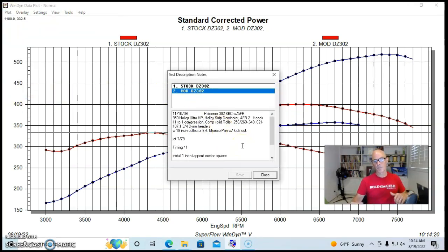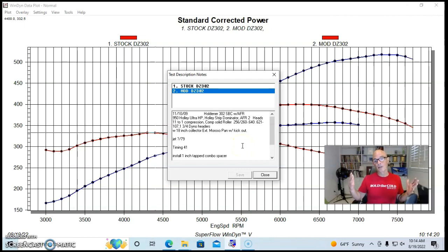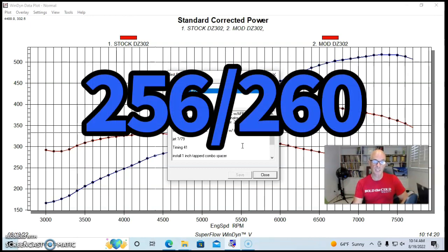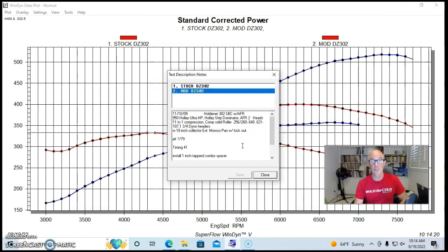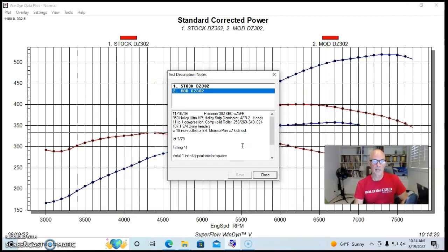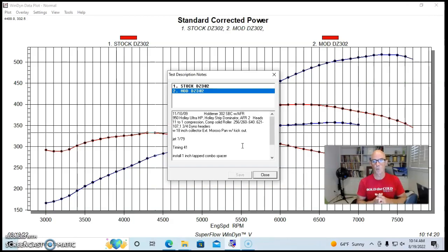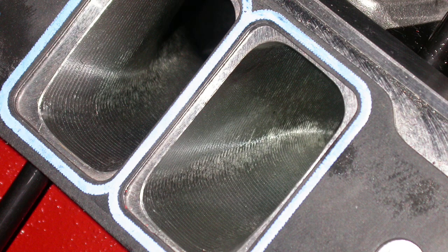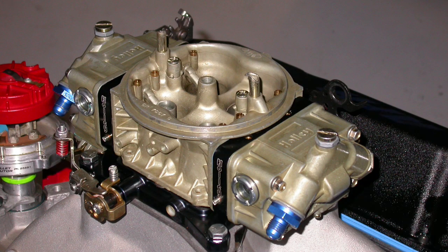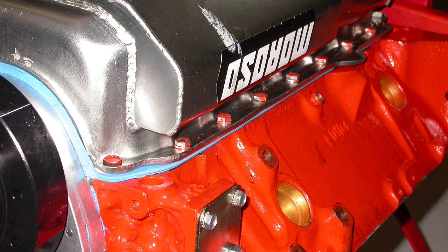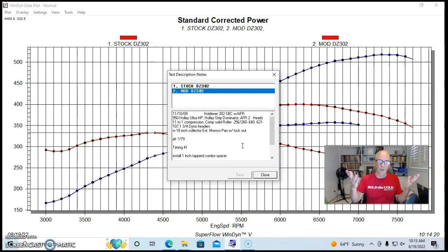So what we did was step up basically everything. We put a much bigger camshaft, in this case, a solid roller camshaft, which was a 640-621 lift, a 256-260 degree duration, and a 107 degree lobe separation angle. Very tight, worked very well. We also had a Holley strip Dominator single plane intake manifold, the airflow research 195 heads, and a 950 Holley, bigger carburetor, more flow. This thing also had a Moroso oil pan on it with a kick out and a windage tray, because the oiling system is critical for what we're trying to do.